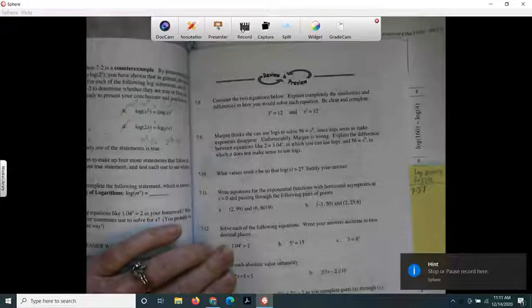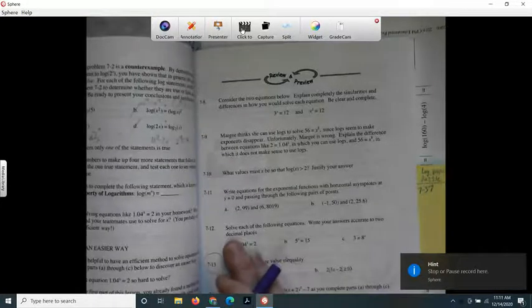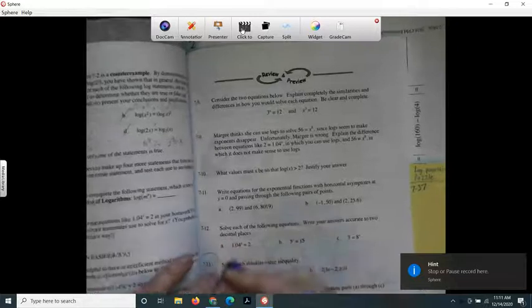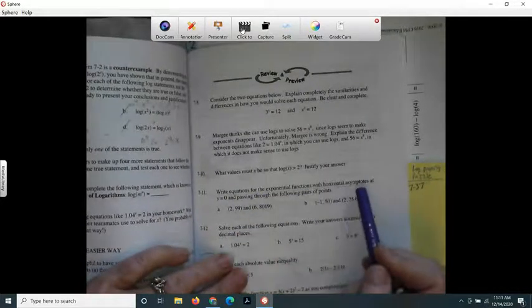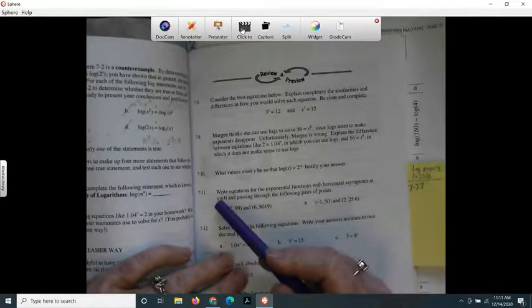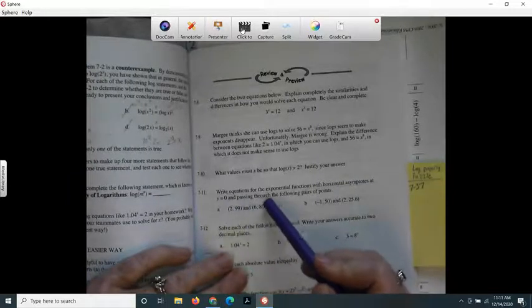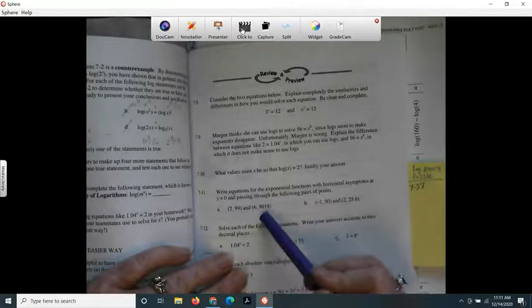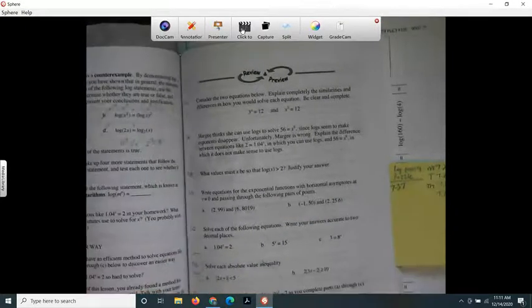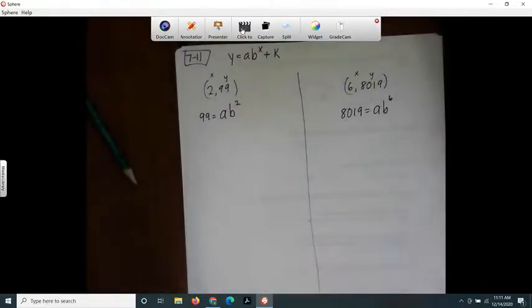Problem 7-11. It says write equations for the exponential functions with horizontal asymptotes at y equals 0 and passing through the following pairs of points. So we have a set of points for A and a set of points for B. I already started doing letter A.